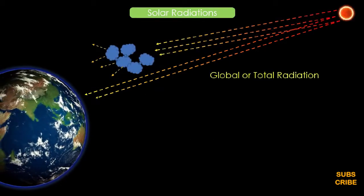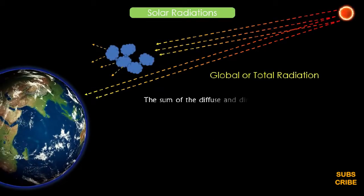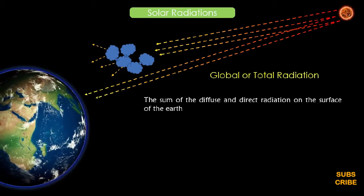Global or total radiation, which is the sum of the diffuse and direct radiation on the surface of the earth.